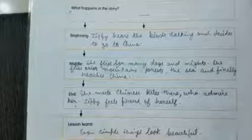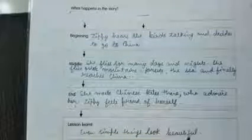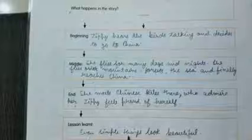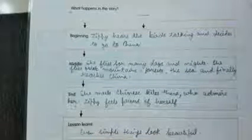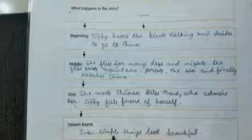Then lesson learned, what you learned in this? Even simple things look beautiful. Even Zippy is of square shape, she looks beautiful. She is very simple, so even simple things look beautiful.